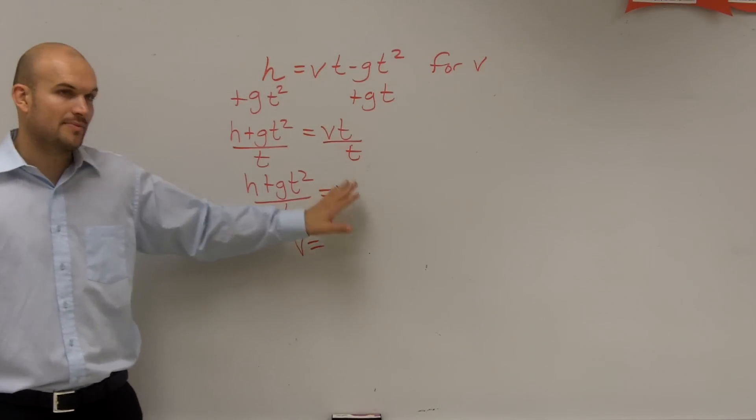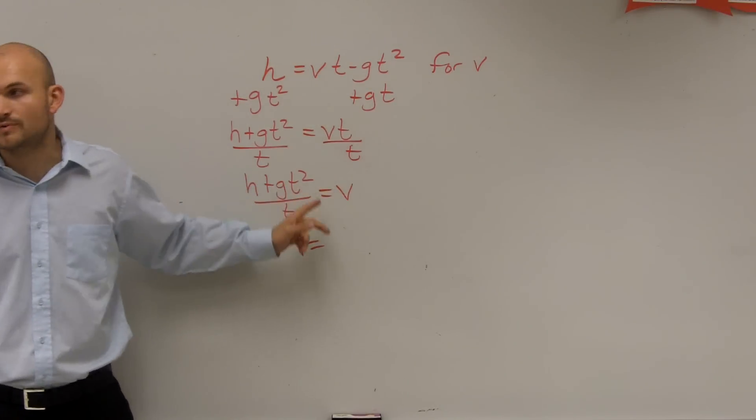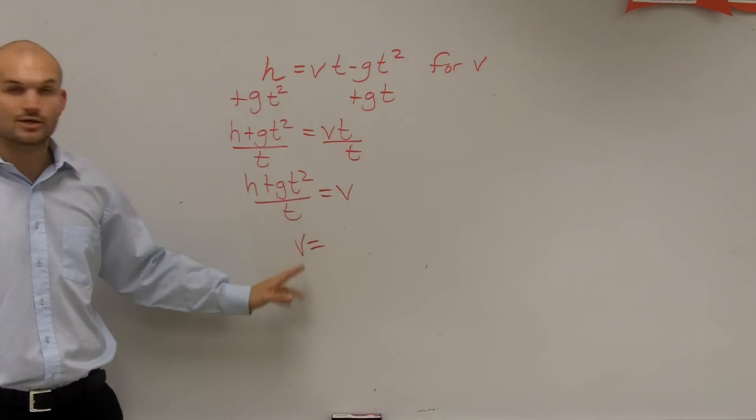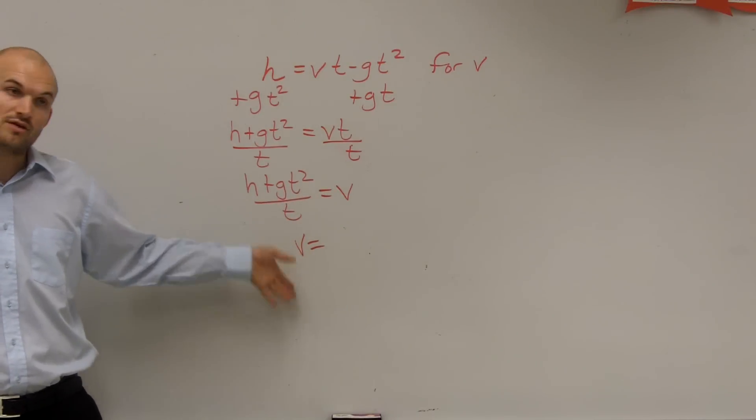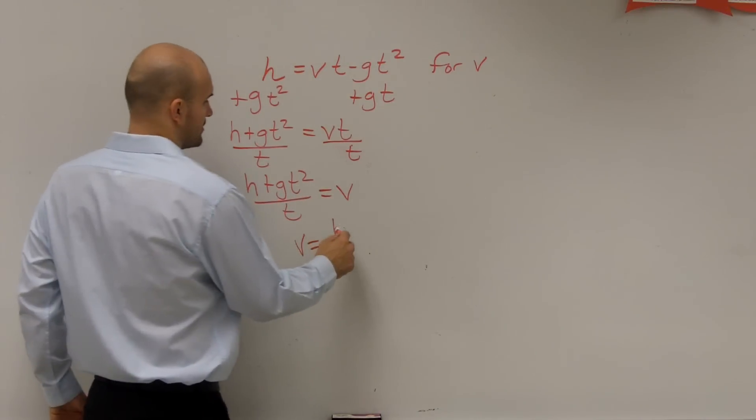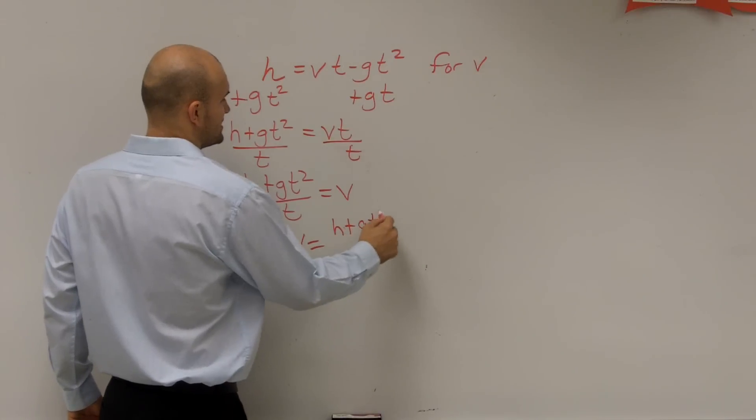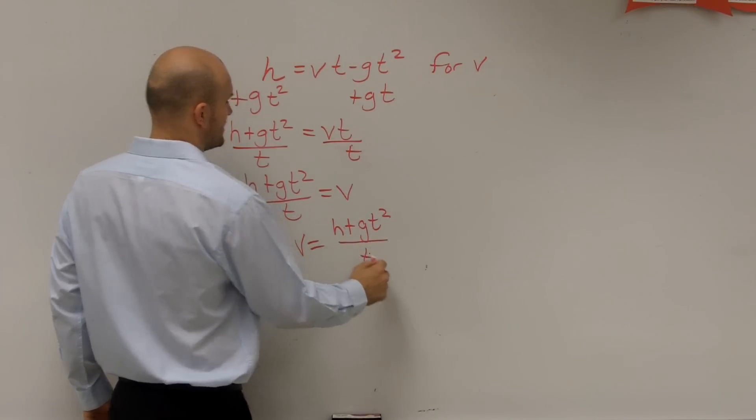Equals v. Now what I'll do is use the reflexive property, and you can rewrite this. It doesn't matter which way you write it. We always like to write our variable, or what we're solving for, first: v equals h plus g t squared divided by t.